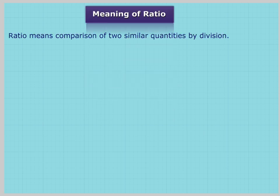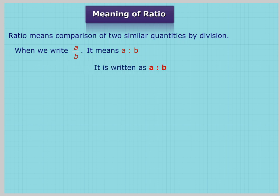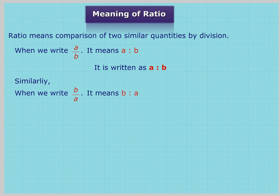Ratio means comparison of two similar quantities by division. When we write A upon B, it means ratio of A to B, written as A colon B. Similarly, when we write B upon A, it means ratio of B to A, written as B colon A.